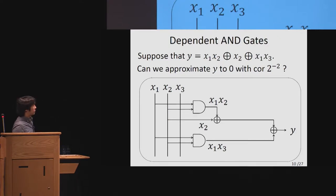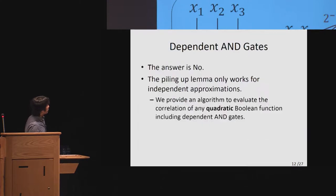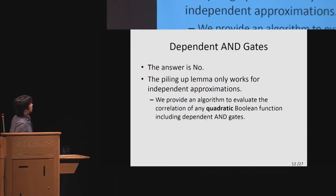Suppose we have an equation Y computed by that equation, including two quadratic terms. The equation is illustrated in the figure. The question is, can we approximate its output Y to 0 with correlation 2^(-2)? If we approximate the first AND gate to 0 with input X2 with correlation 2^(-1), and if we approximate the second AND gate to 0 with correlation 2^(-1), then the result will be 0. So if piling up lemma applies, then the correlation that Y is 0 can be calculated as 2^(-2). However, the answer is no, because the piling up lemma only works for independent approximations, and this case is dependent. We need the same tool to deal with dependent AND gates.